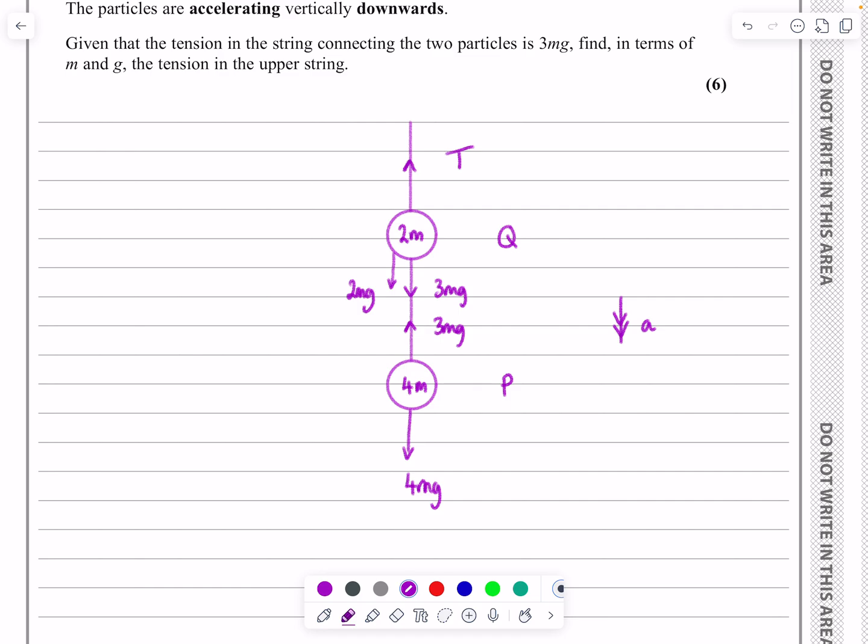So now that we're looking at that, what have we got? I'm going to consider P separately to Q. I'm going to do F equals MA for both of them and see what we get.